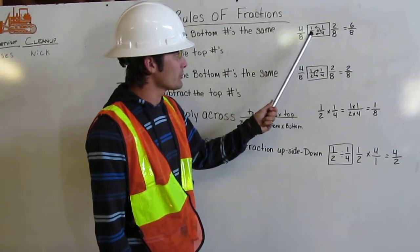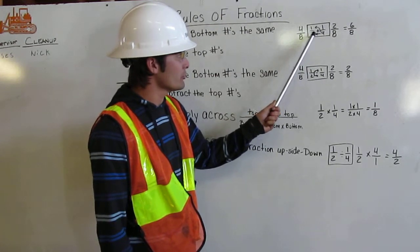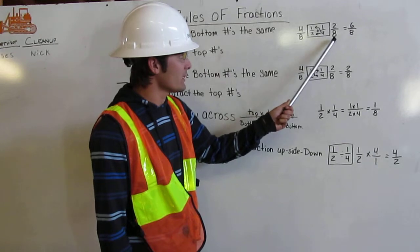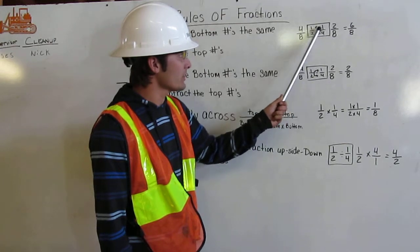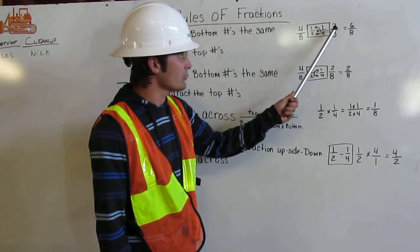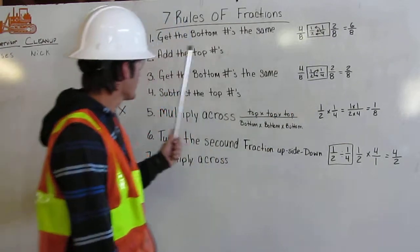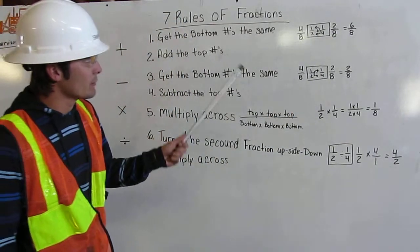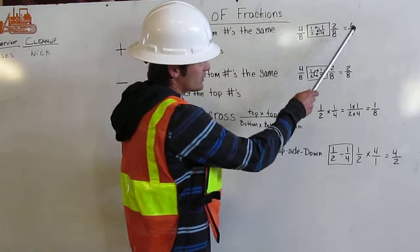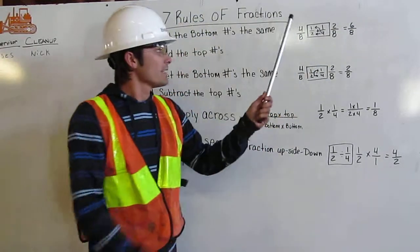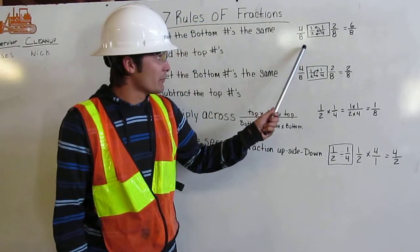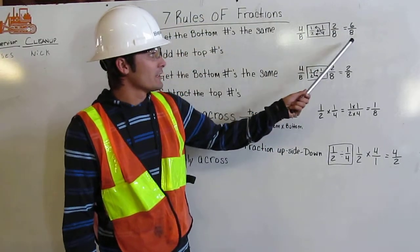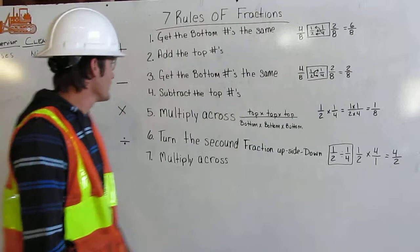Over here I'm going to switch it up. I'm going to go 2 times 4, and that gives me 8, and 2 times 1, that gives me 2. Then I'm going to add my top numbers. 4 plus 2 is 6, and I'm going to keep my bottom number the same, and that stays at 8.